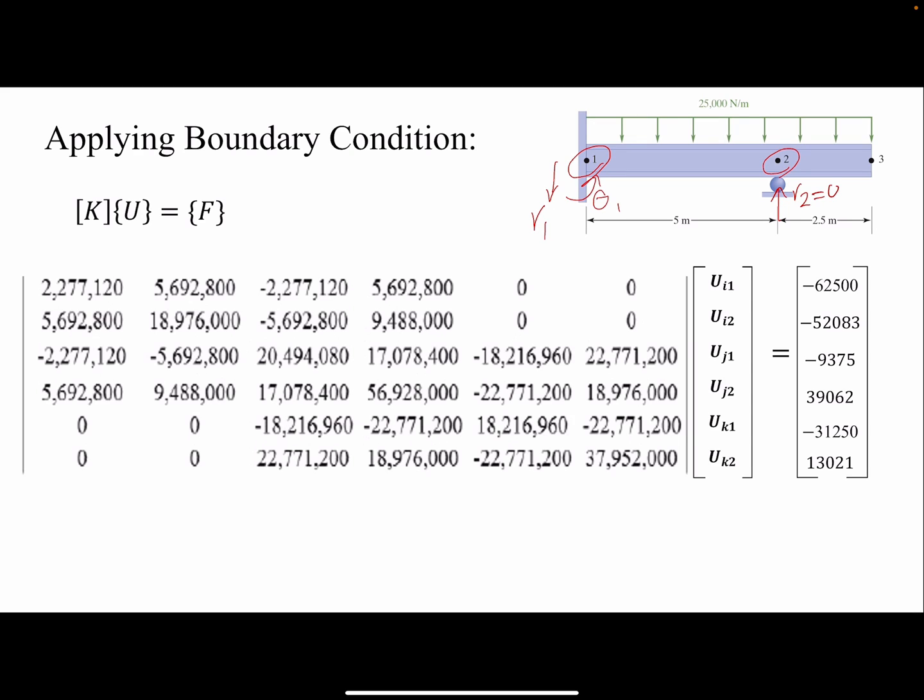The first row is associated with the first nodal variable. I've written all of them based on u to be consistent, but we know u_i1 is simply v1, this one is theta 1, this one is v2, theta 2, v3, and theta 3.